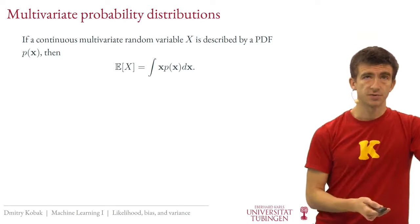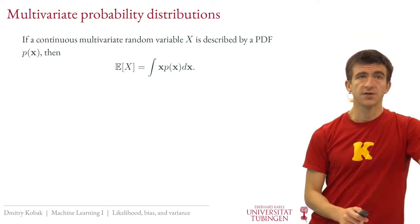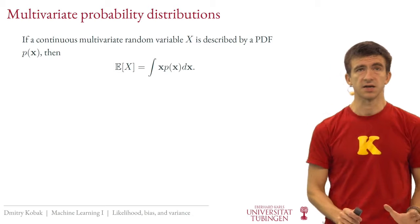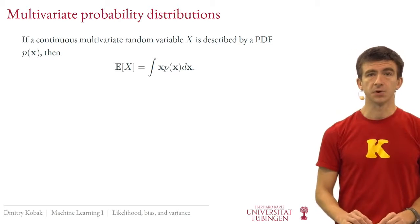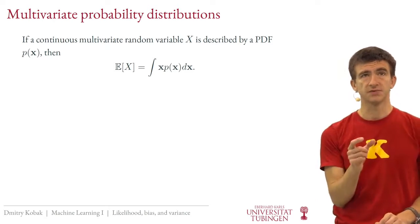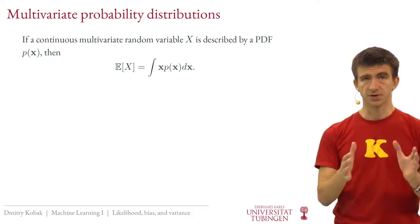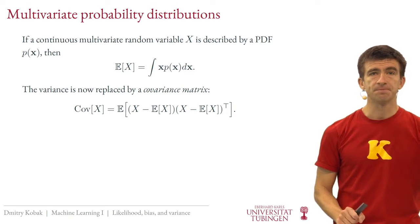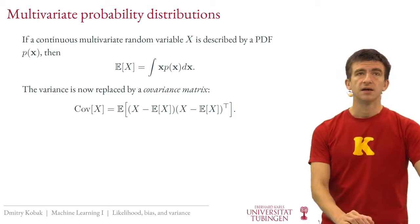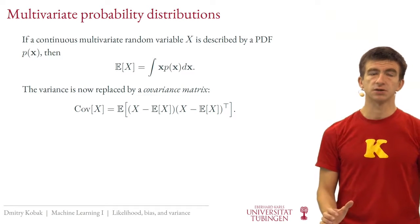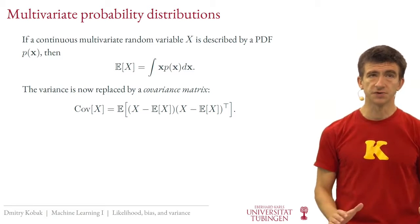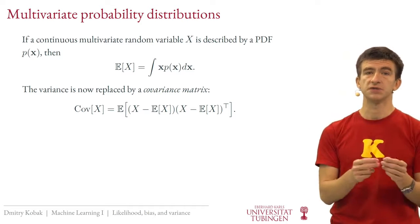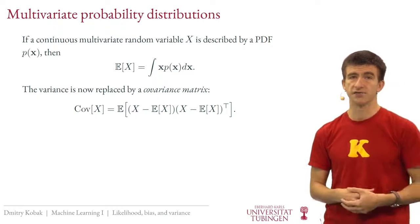For a continuous multivariate random variable described by a probability density, the expected value works exactly the same — you put vectors in and get a vector out. So the expected value will also be a vector. The variance is more tricky: since the deviation from the average is now a vector, squaring it yields a matrix. So the variance of a random vector becomes a covariance matrix — for a two-dimensional variable, this is a two-by-two matrix.